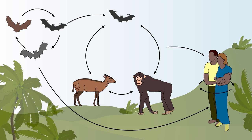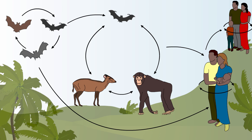When humans come into contact with carcasses of infected animals and become infected themselves, the virus becomes more easily transmitted to others. It should be noted that direct physical contact is necessary for infection — this disease is not spread in an airborne manner like influenza.